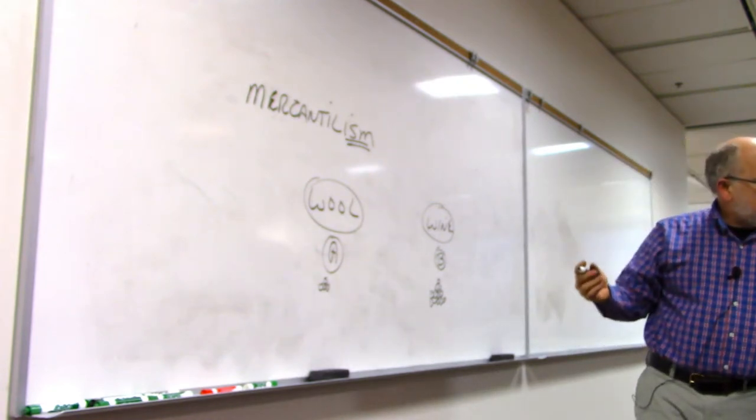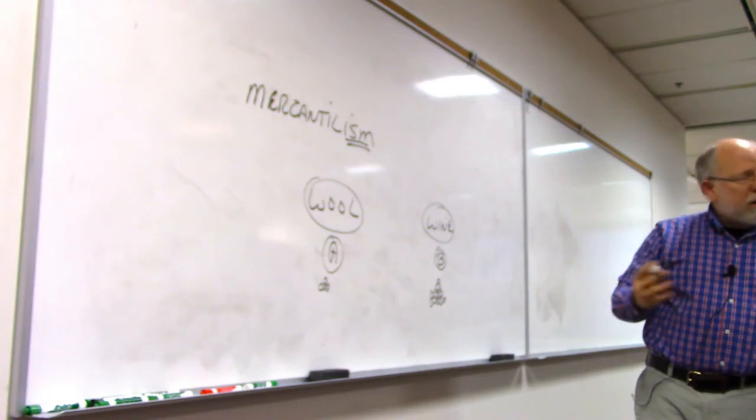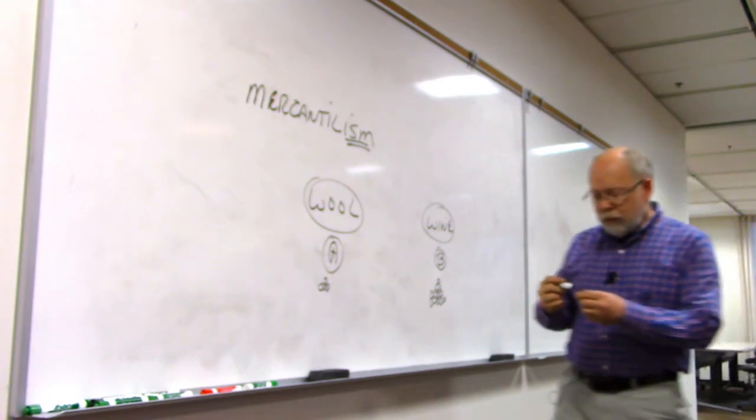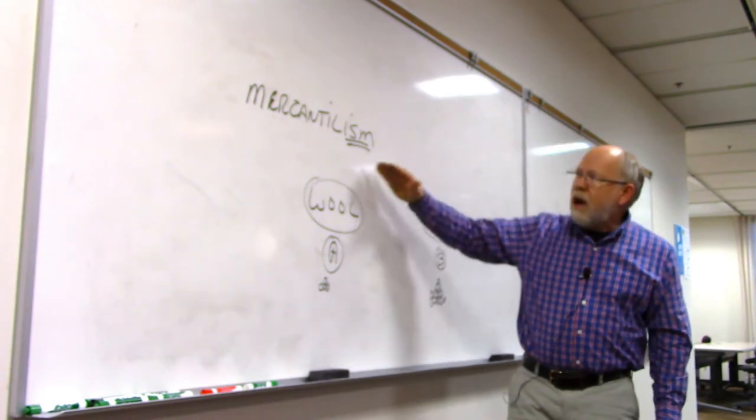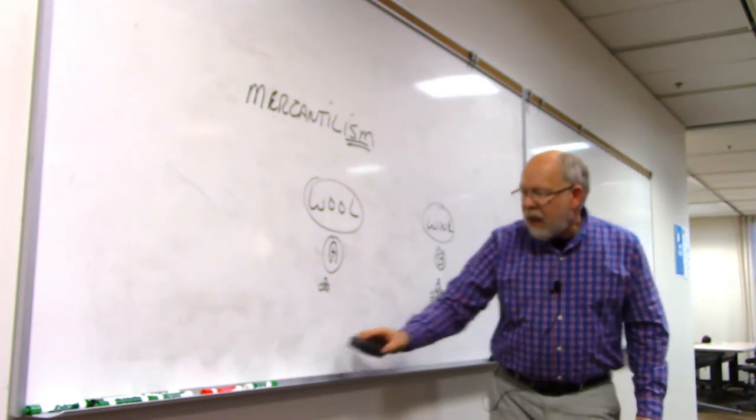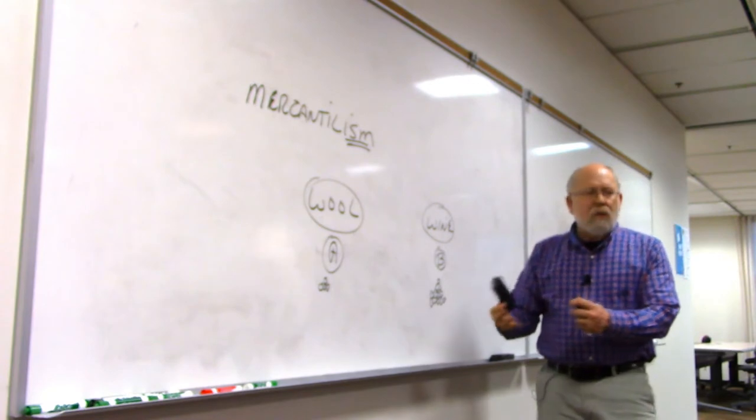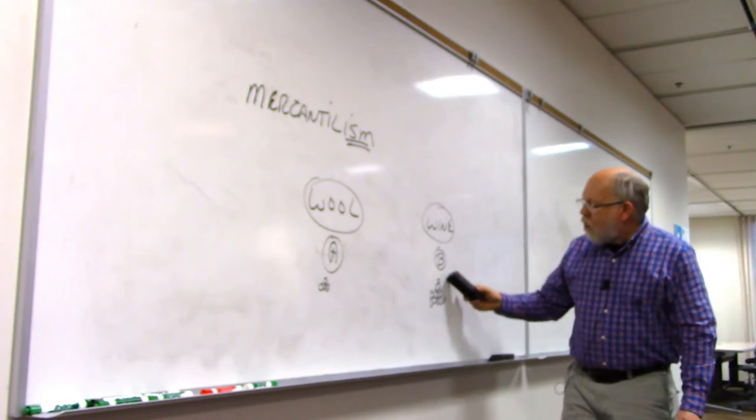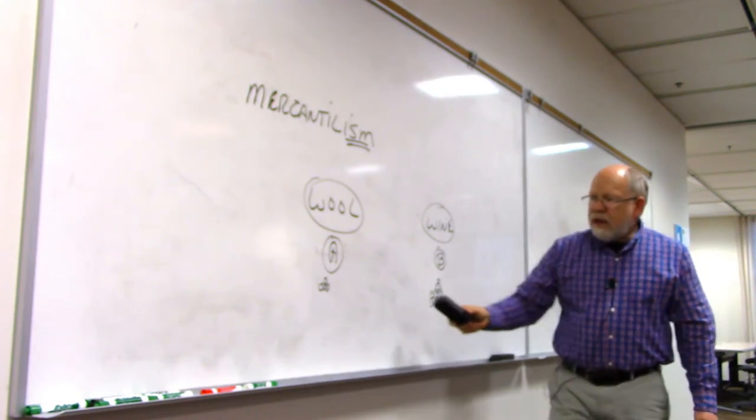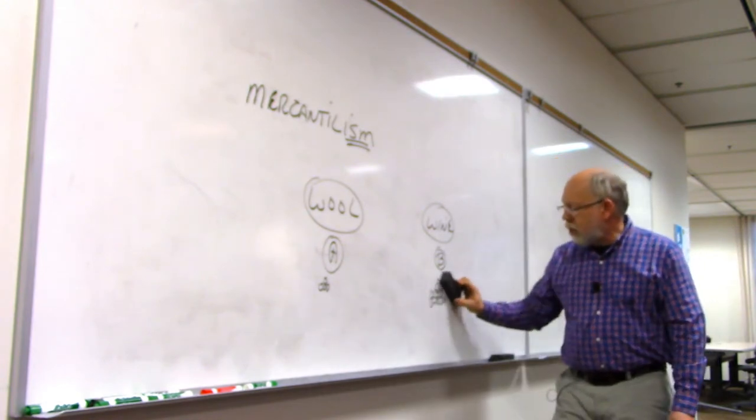Adam Smith's book again, The Wealth of Nations, How Do Nations Get Wealthier? He was writing about that. And the prevailing doctrine at the time was this doctrine of mercantilism. And under mercantilism, the king wanted to have the wealthiest empire compared to everybody else, which means he wanted to have more money in his kingdom than in everybody else's. So how does this work?